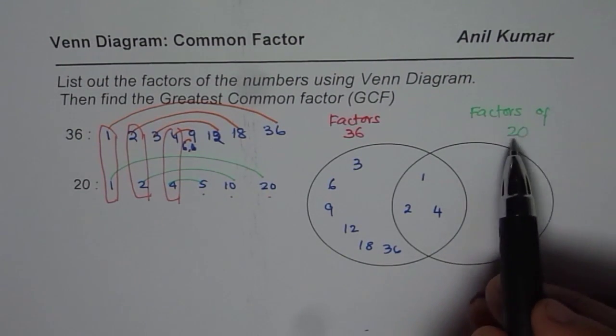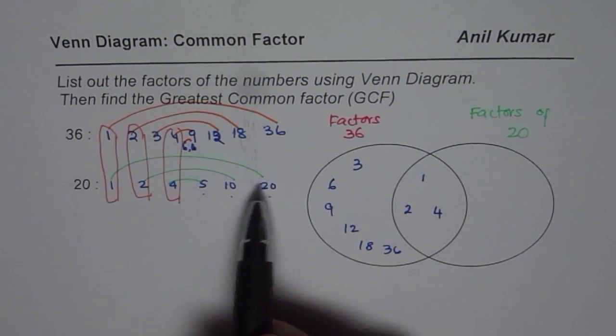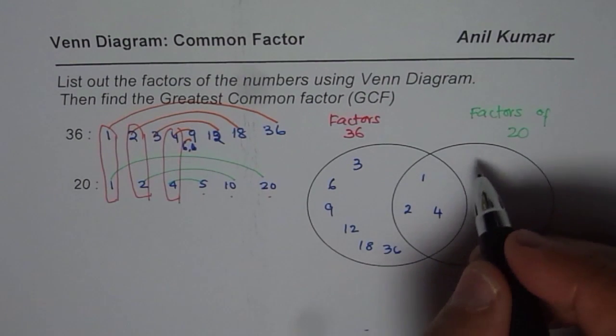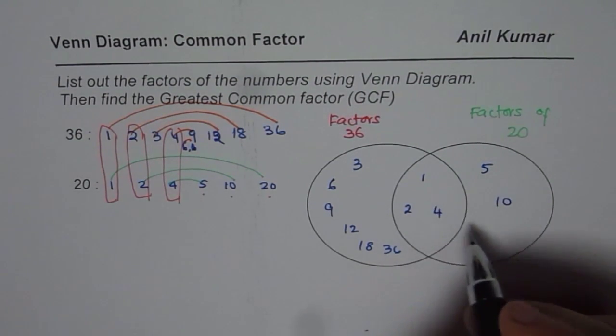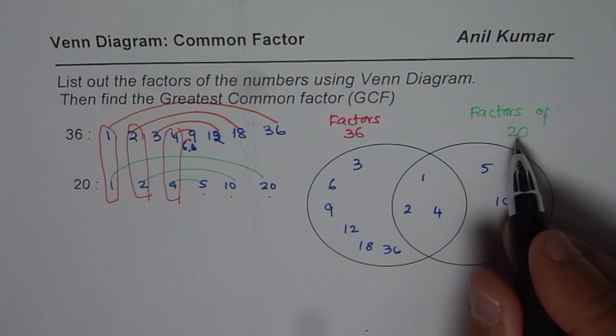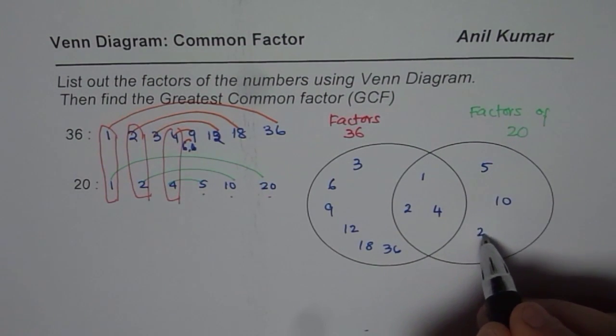Now let us look into factors of 20. We have 6 of them, 3 are common. And 5, 10, and 20 are not common. So we will write them outside of the common circle, but within the circle of factors of 20.